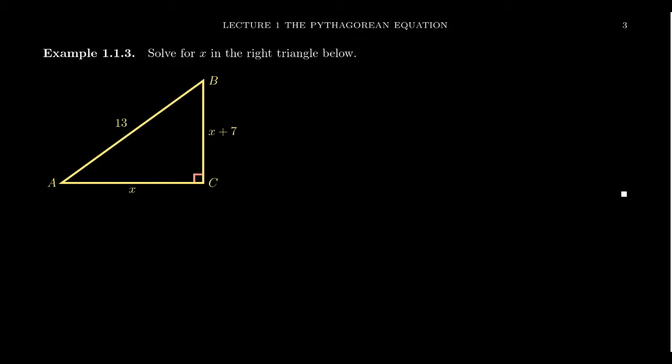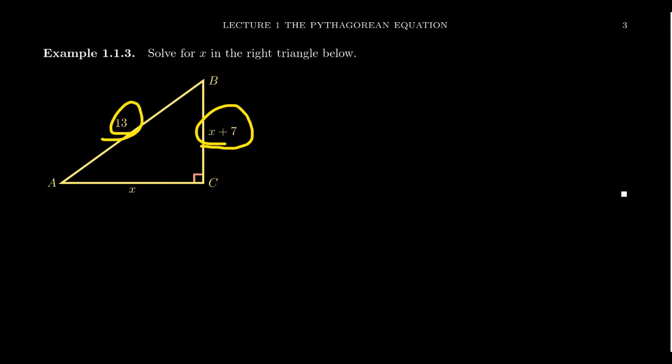Let me show you some examples using the Pythagorean equation. Suppose we have a right triangle ABC on screen. We know the hypotenuse is 13. One leg is unknown — call it X. What we know is that its hypotenuse is 13, and one of the legs is exactly seven units longer than the other.